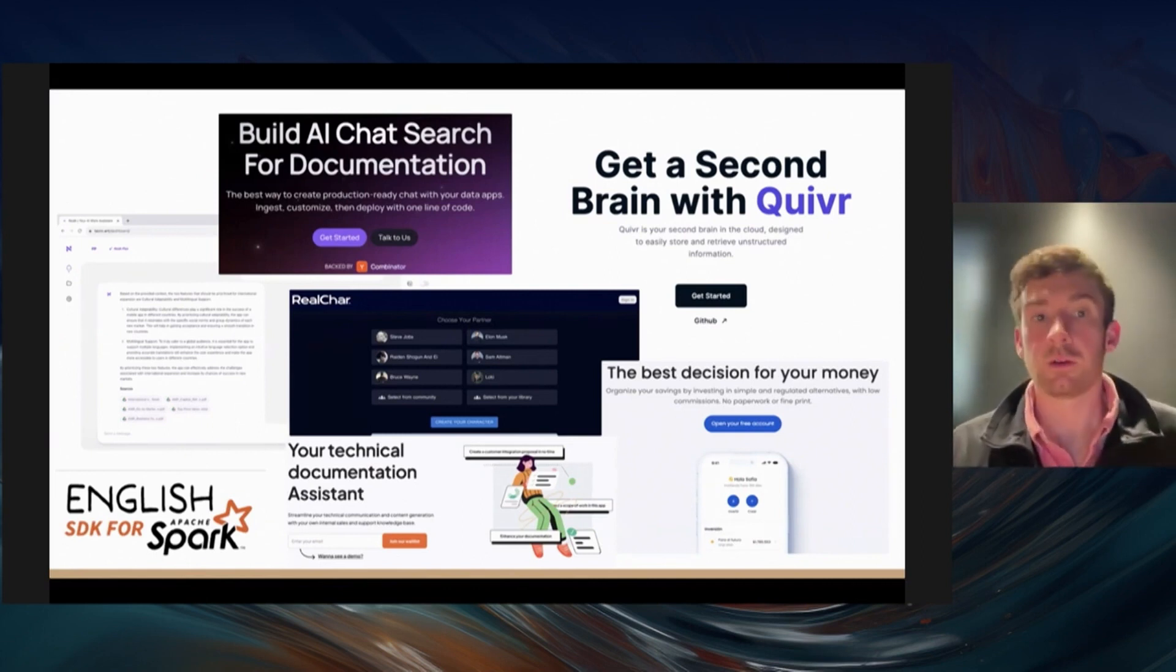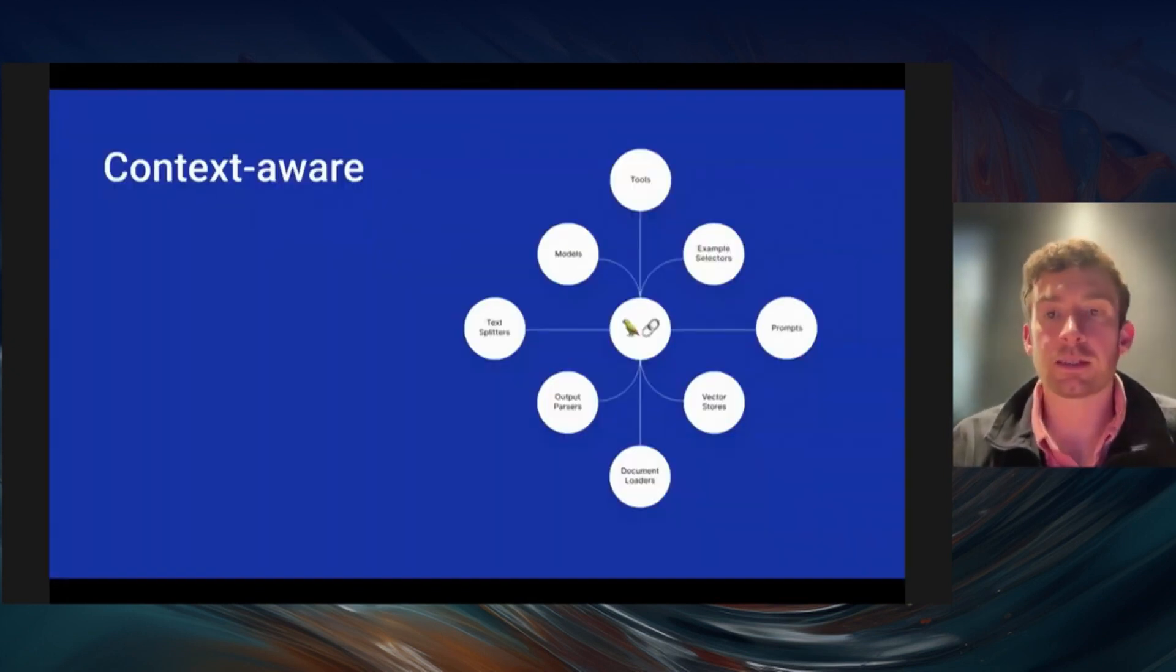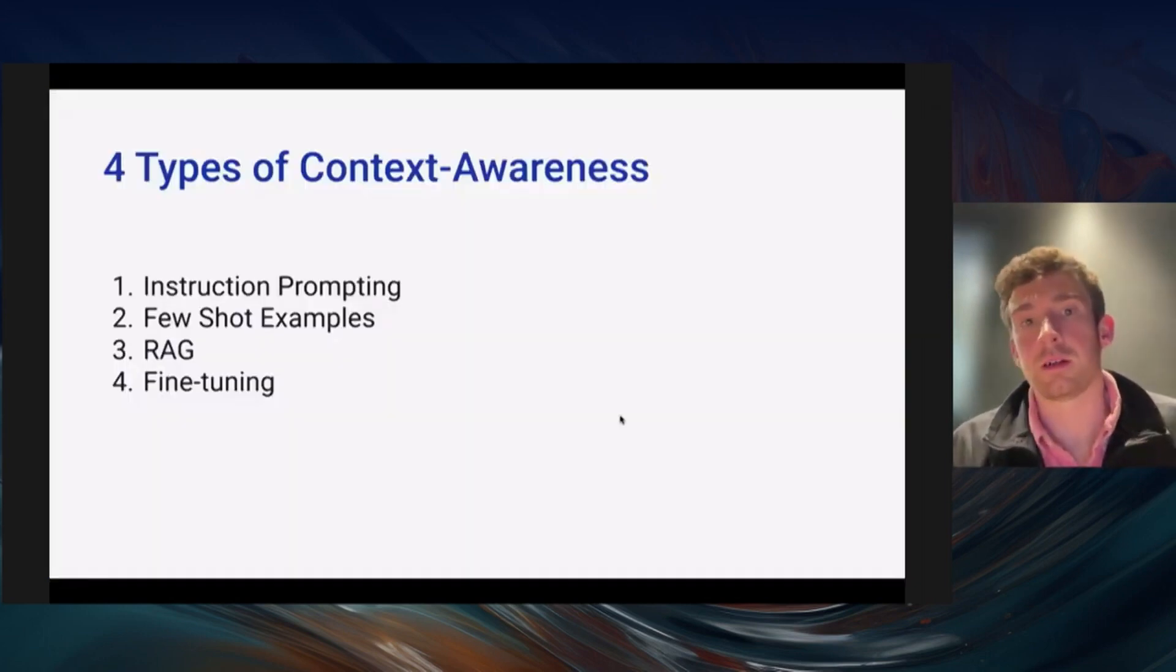These combine language models with external sources of knowledge and computation, bringing them together in these context-aware reasoning applications. I want to break that down because we've looked back on all the applications built on top of LangChain, and we think LangChain is best used to build these types of applications. Context-aware means connecting the language model to external sources of data and computation. There's different types of context that you can bring to a language model.